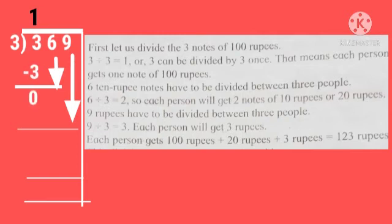6 ten rupee notes have to be divided between 3 people. 6 divided by 3 is equal to 2. So, each person will get 2 notes of 10 rupees, or 1 note of 20 rupees. Means, 6 minus 6, 0. Now, what is remain? 9.